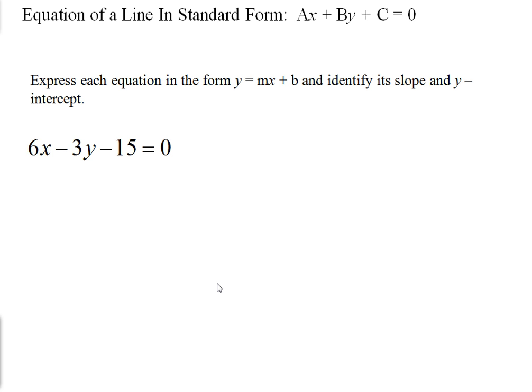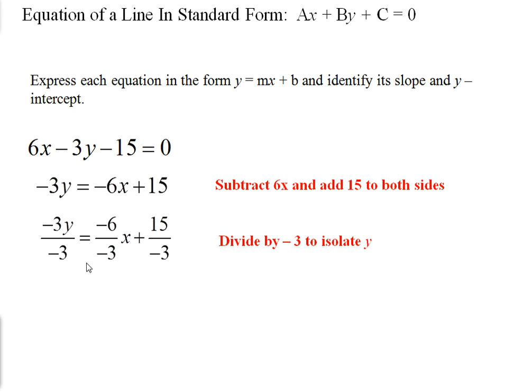One more example. In this case, we have 6x minus 3y minus 15 is equal to 0. So we need to isolate the term with y in it first. So we're going to subtract 6x and add 15 to both the left side and the right side. And we're left with negative 3y, always taking the sign in front of the term, is equal to negative 6x plus 15. So now we need to divide both sides by negative 3. So we divide each of the terms in the equation by negative 3. And we're left with y is equal to negative 6 over negative 3 is positive 2, and 15 over negative 3 is negative 5. So y is equal to 2x minus 5. Our slope is 2 and our y-intercept is negative 5, which we can take right from the equation.